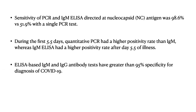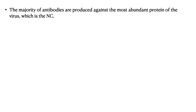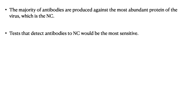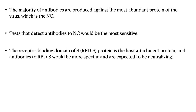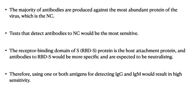ELISA-based IgG and IgM have greater than 95% specificity for diagnosis of COVID-19. The majority of antibodies are produced against the most abundant protein of the virus, the nucleocapsid, and tests detecting antibodies to the nucleocapsid are considered the most sensitive. However, the receptor binding domain of S protein (RBDS) is the host attachment protein, and antibodies to this are more specific and expected to be the ones neutralizing the virus. Therefore, using one or both antigens for IgG and IgM results in higher sensitivity.